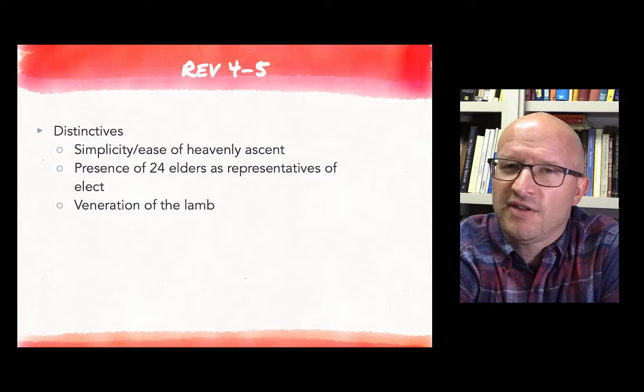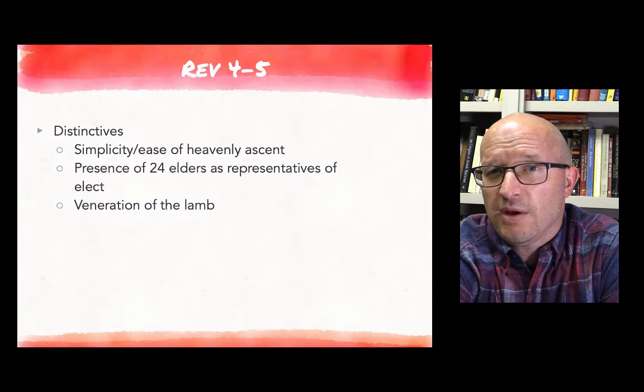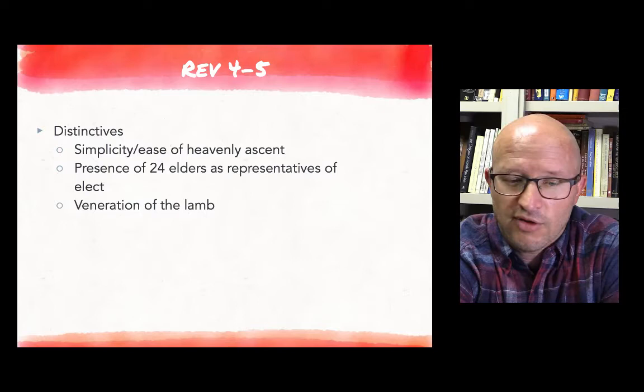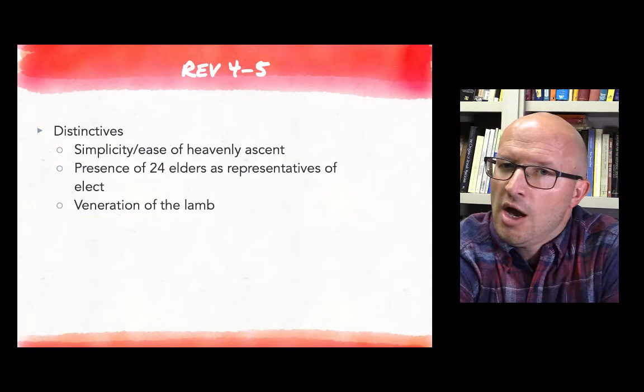The second distinctive is the presence of these 24 elders that surround the throne of God in chapter 4. We are right to think of these as human elders, as Hurtado says, as representatives of the elect, as representatives of the human community. This is pretty distinctive in comparison to the tradition.